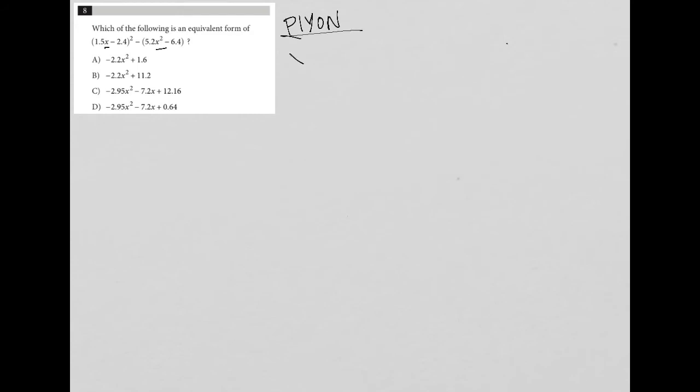So what that means is I can create my own number for x. So let's say x equals 2. I plug that 2 into the question. So I'd have parentheses 1.5 times 2, right? Replacing this x with 2. And then minus 2.4. And then squared. And minus parentheses 5.2. Again,